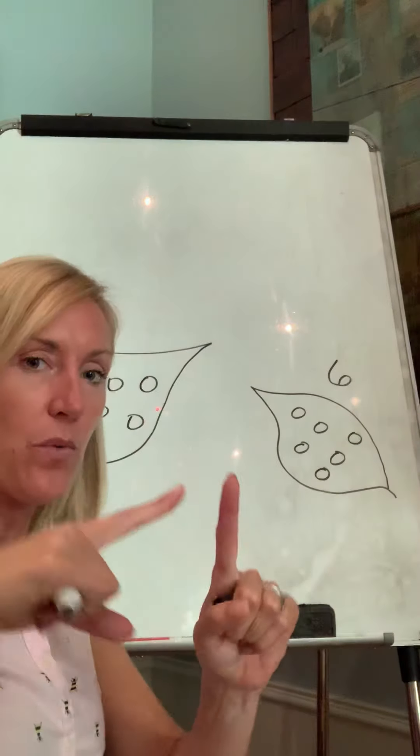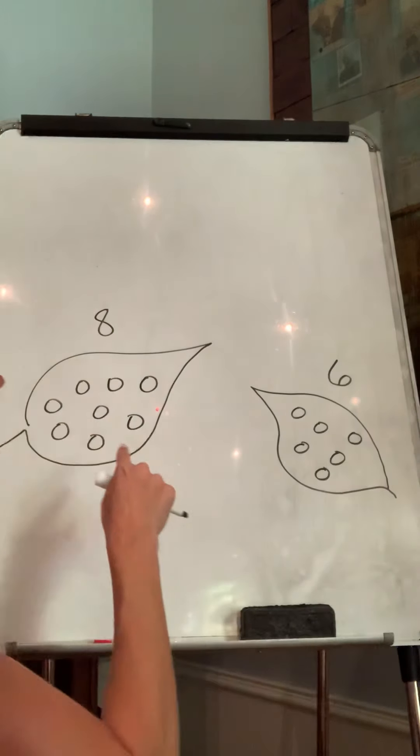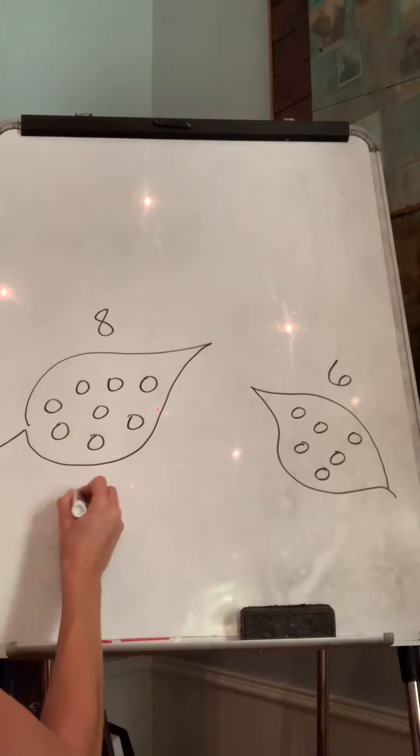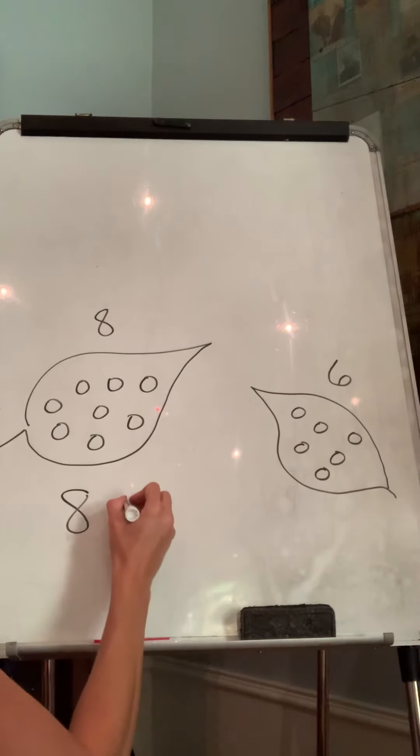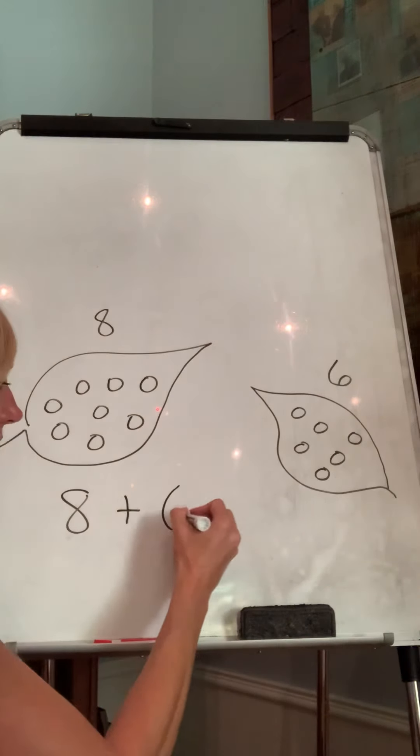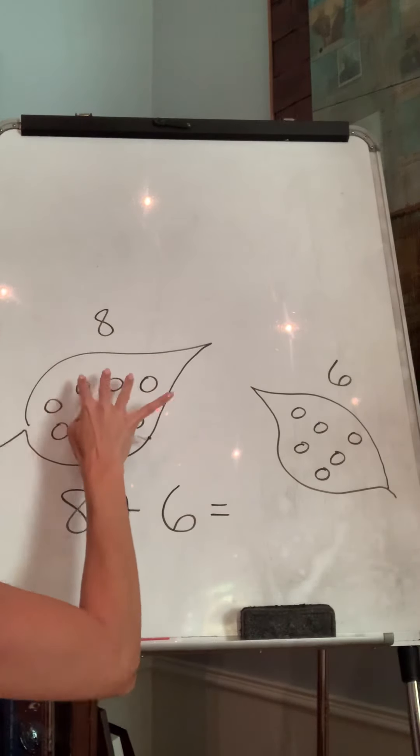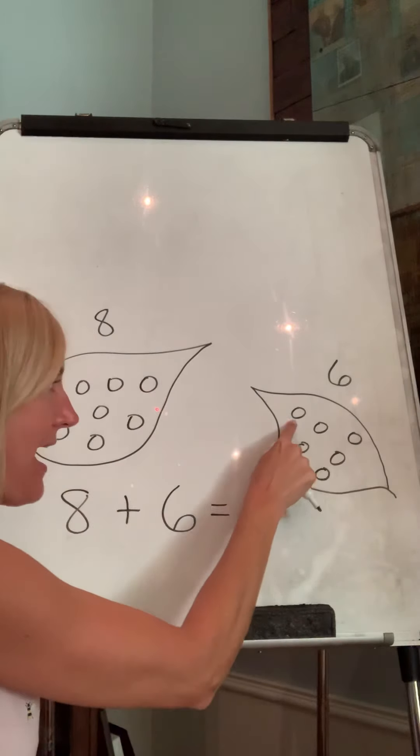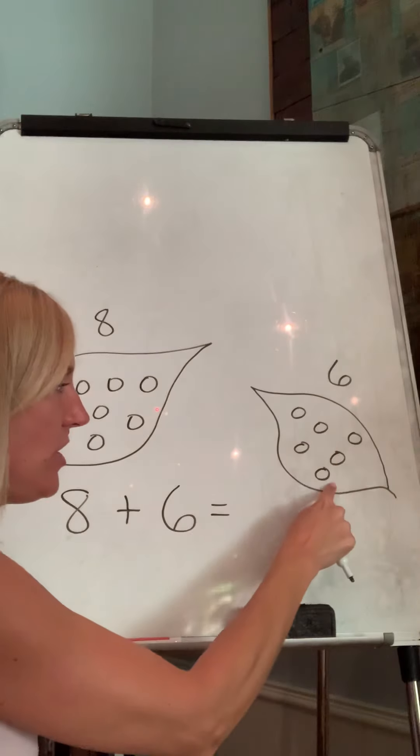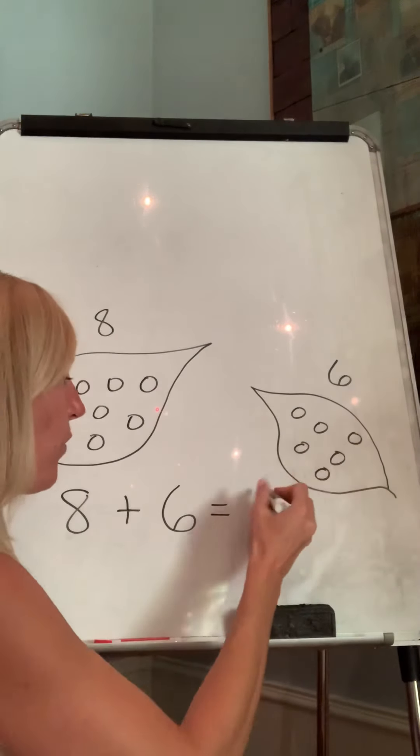Well, if we're putting them together, what are we going to do? Add. So we have eight over here and six more equals eight. I say my big number, eight, and I keep counting. Nine, 10, 11, 12, 13, 14.